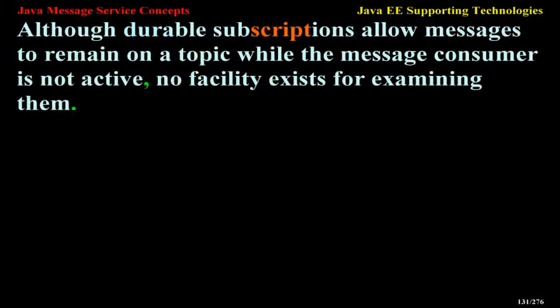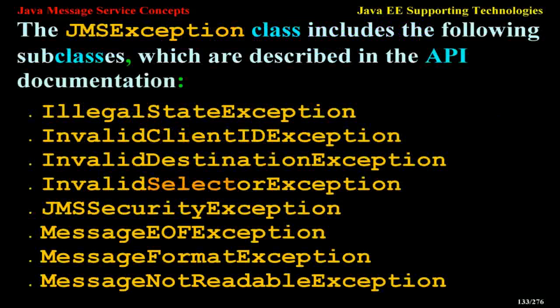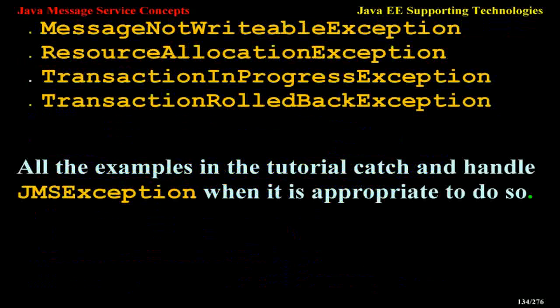JMS Exception Handling. The root class for exceptions thrown by JMS API methods is JMSException. Catching JMSException provides a generic way of handling all exceptions related to the JMS API. The JMSException class includes subclasses such as IllegalStateException, InvalidClientIDException, InvalidDestinationException, InvalidSelectorException, SecurityException, MessageEOFException, MessageFormatException, MessageNotReadableException, ResourceAllocationException, TransactionInProgressException, and TransactionRolledBackException.